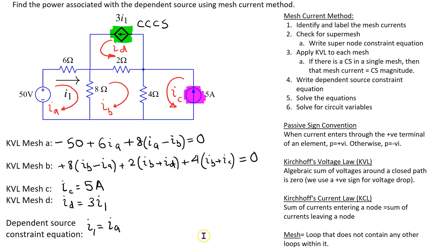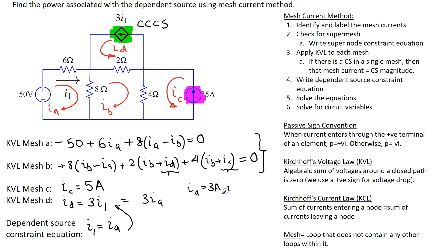We now have only two unknown variables: IA and IB. Substituting the constraint gives ID = 3·IA, and the values of ID and IC can be substituted into the two KVL equations. Solving, we find IA = 3 A, IB = −1 A, IC = 5 A (already known), and ID = 3 × 3 = 9 A.